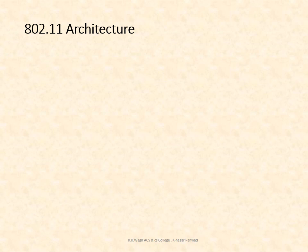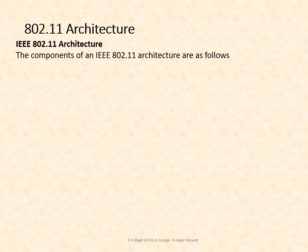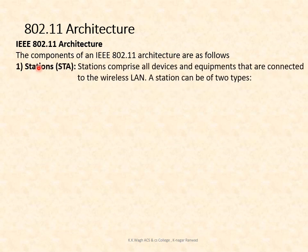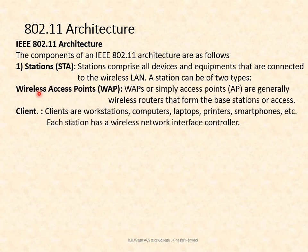Next we will study 802.11 architecture. The IEEE 802.11 architecture has several components. The first is stations, that is STA — comprising all devices and equipment connected to wireless LANs. There are two types of stations: wireless access points (WAP), which are generally a wireless router forming the base station, and clients such as workstations, computers, laptops, printers, and smartphones. Each station has a wireless network interface controller.